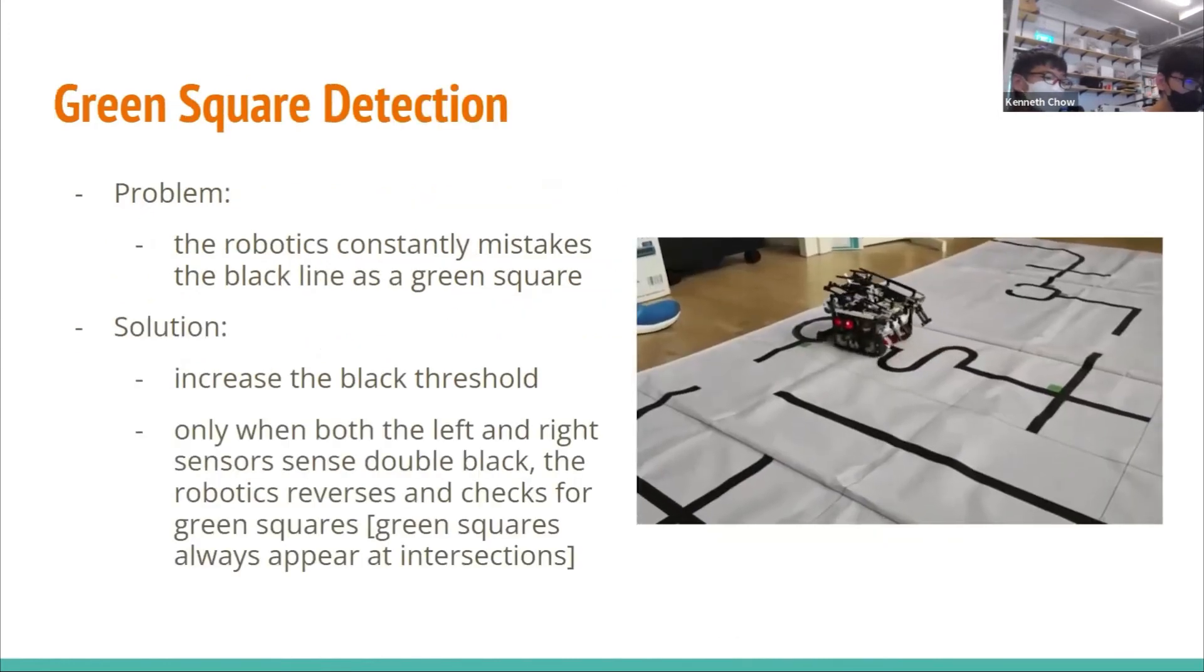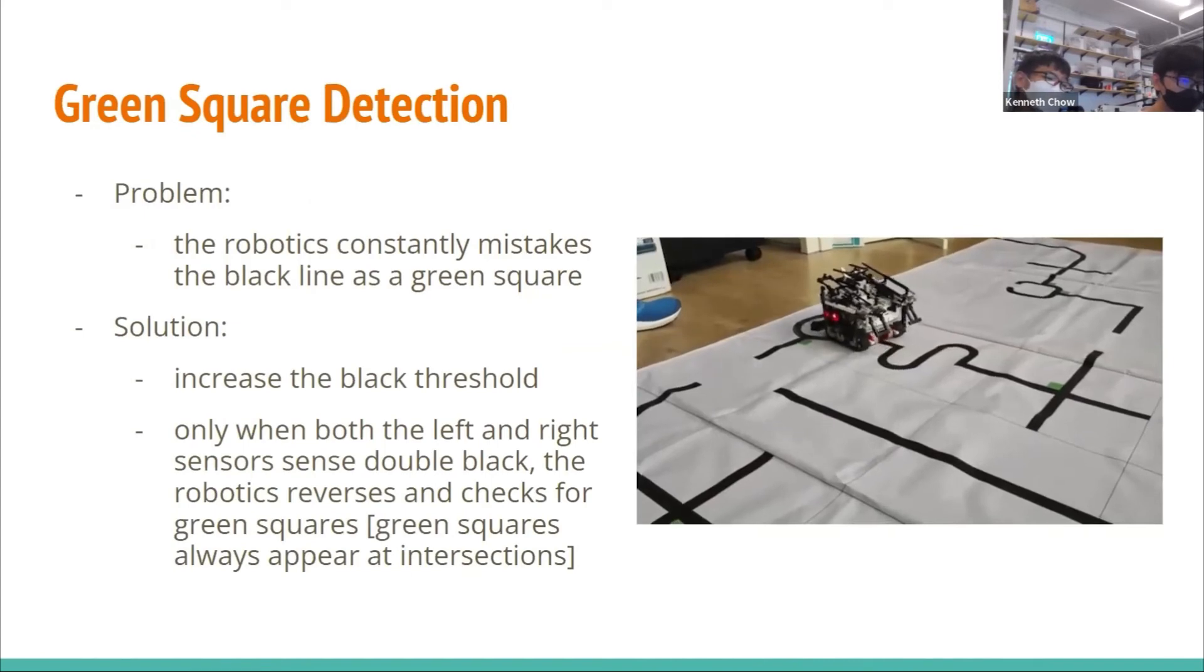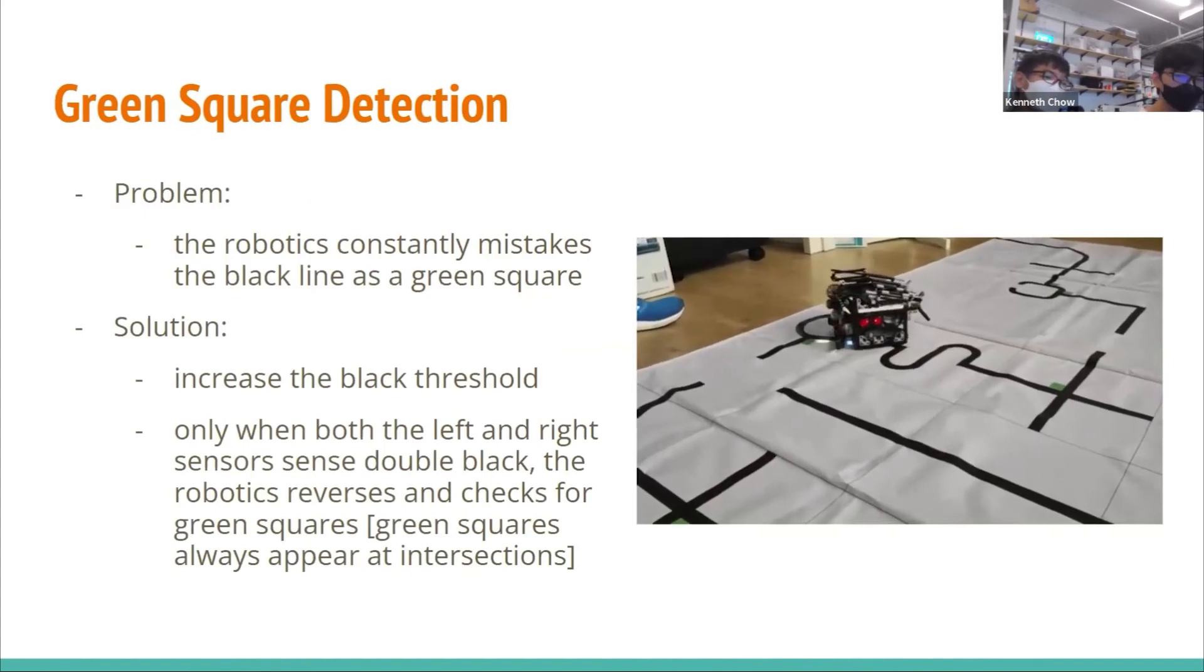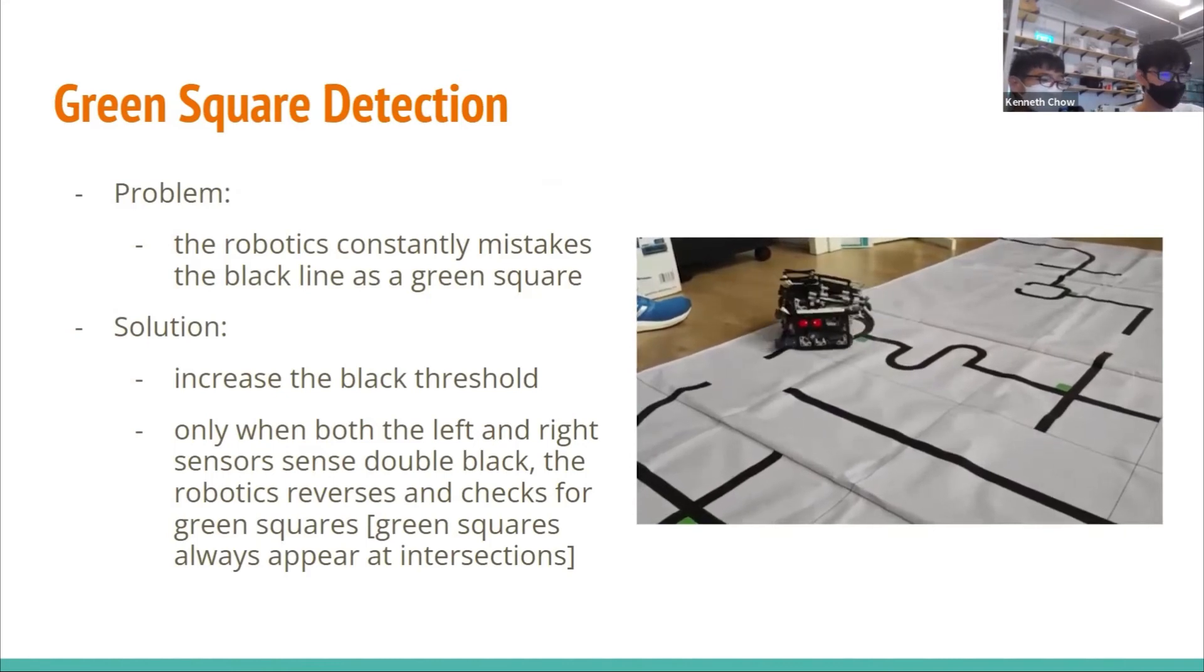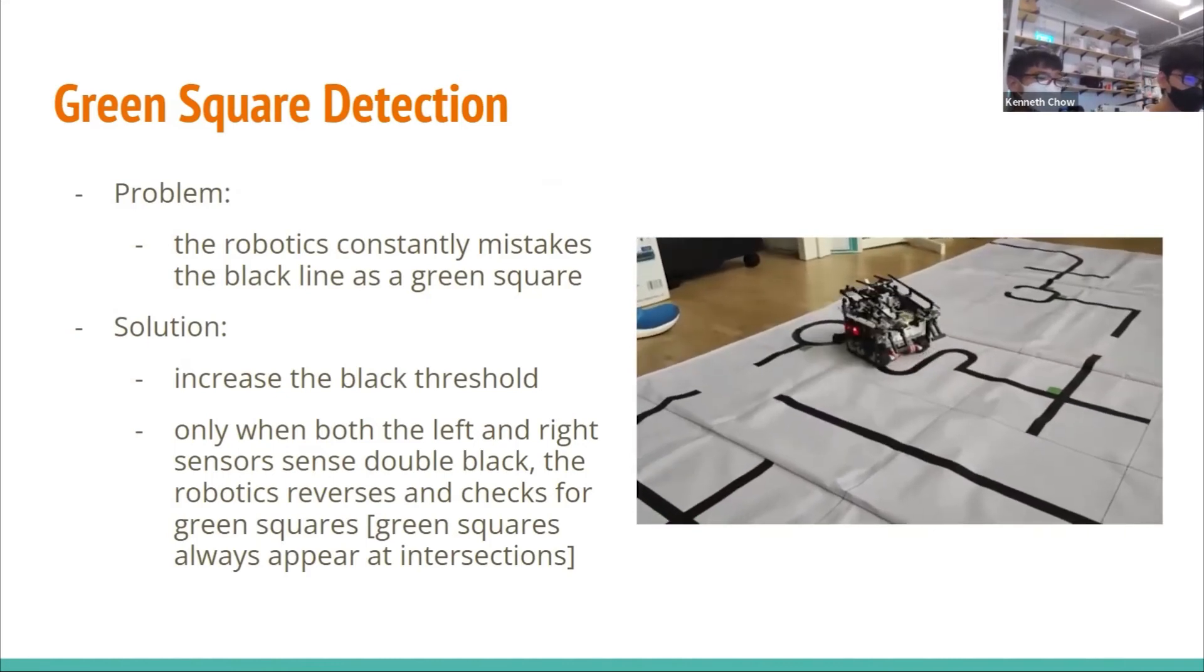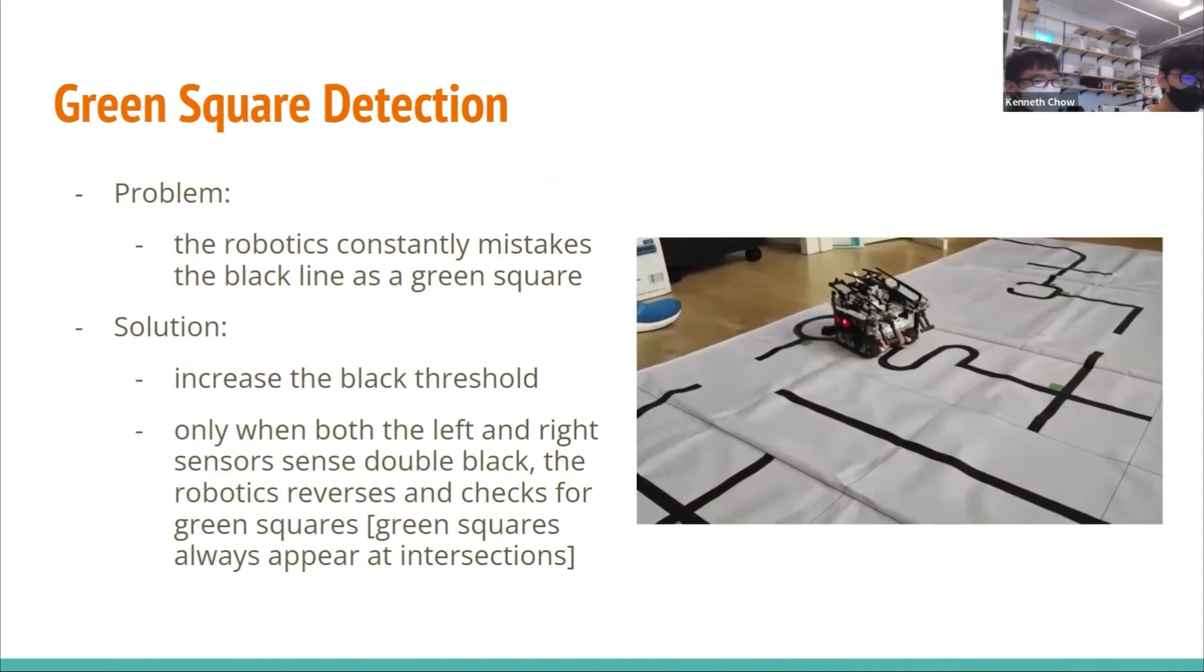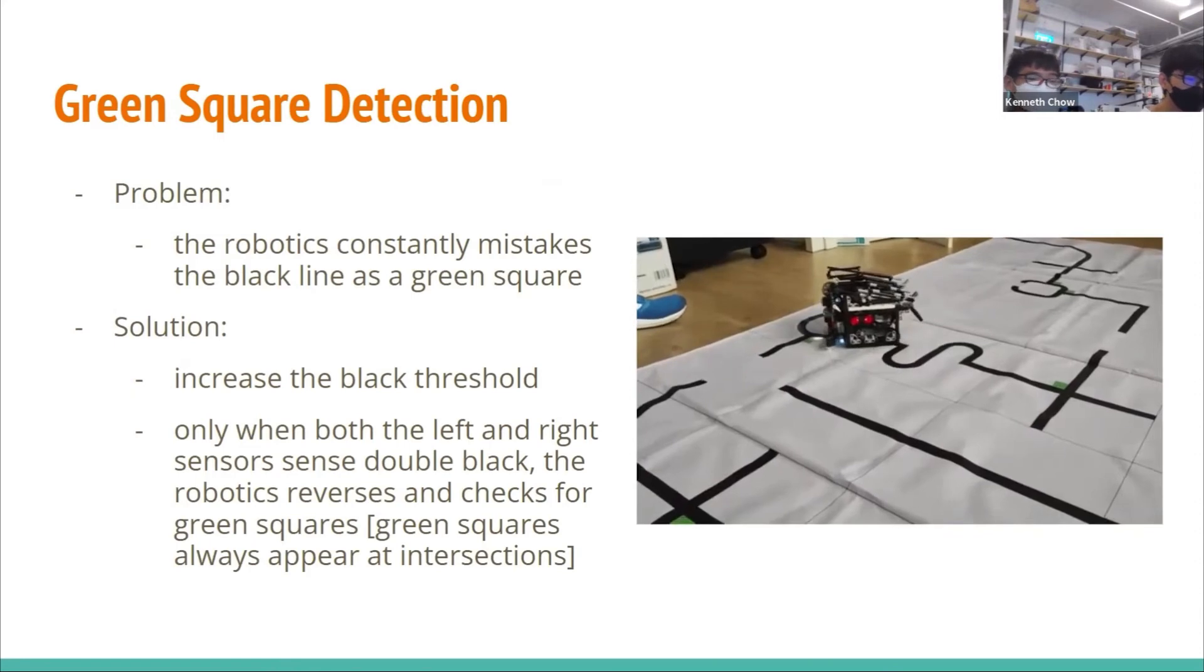I will now be moving on to green square detection. Previously, the robot constantly mistakes the black line as the green square, as both values are quite similar. Our solution was to increase the black threshold. We also realized that the green squares should all appear at intersections. Thus, when both left and right sensors sense double black, the robot reverses and checks for green squares.